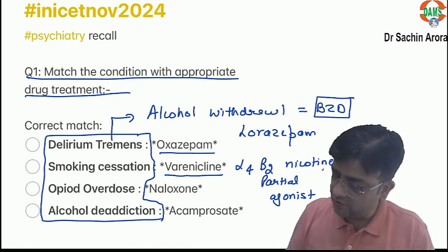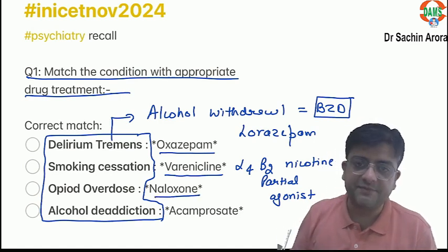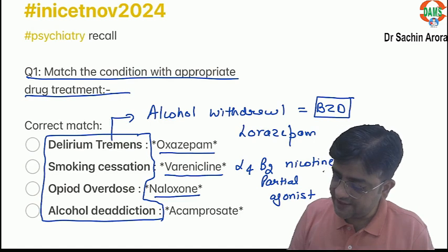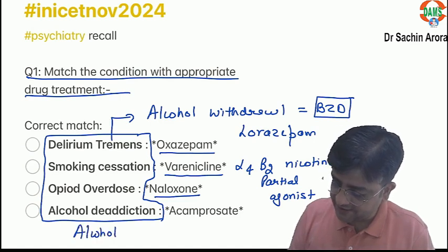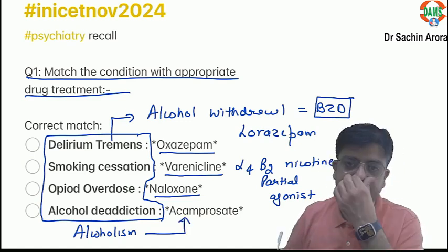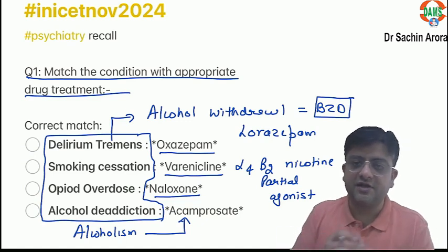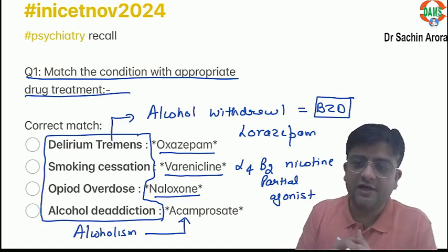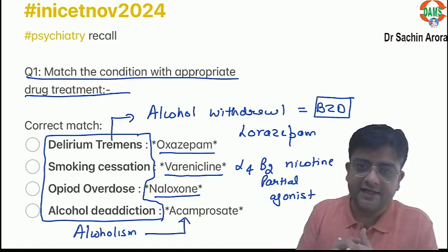For opioid overdose, we use naloxone. Some students were saying alcoholism was mentioned, some were saying alcohol deaddiction, some were saying treatment of alcoholism. Acamprosate, an NMDA antagonist, is the drug used for alcohol deaddiction.